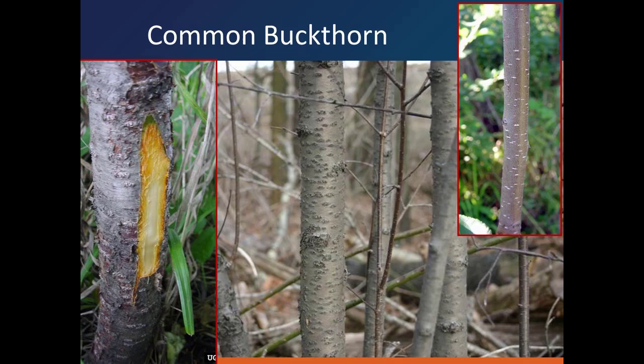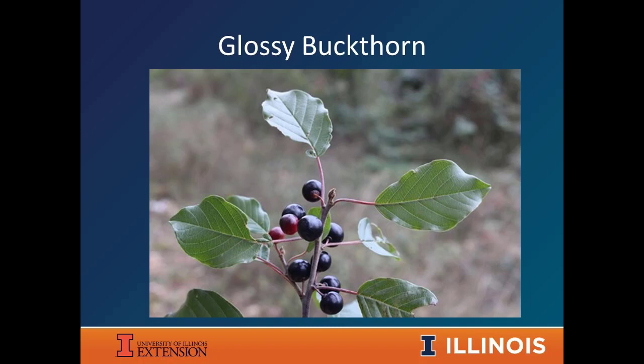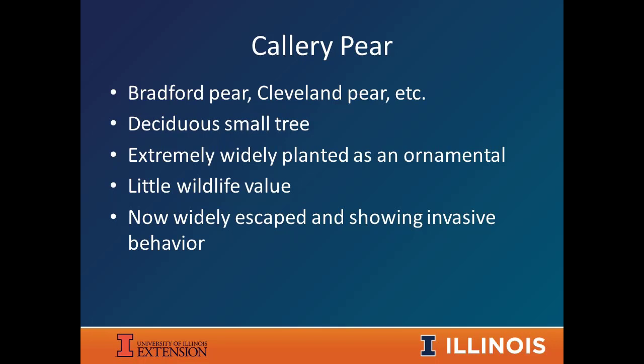There is another buckthorn called glossy buckthorn, also an invasive species, which typically grows in wetland, wet forest, or wet habitats. It looks pretty similar to common buckthorn, but the veins don't arc and curve — they're more straight. It also has those dark purple berries.